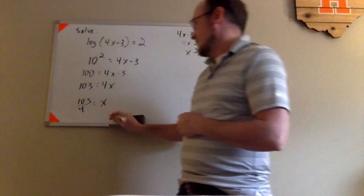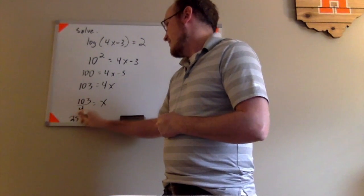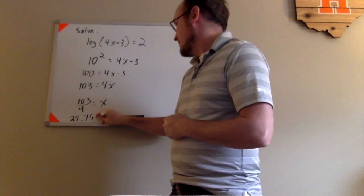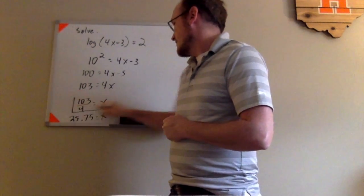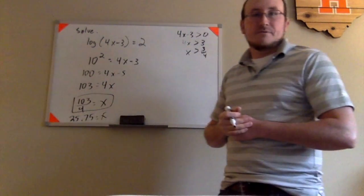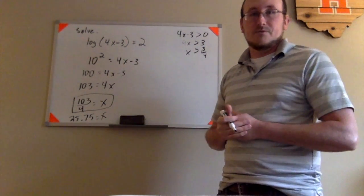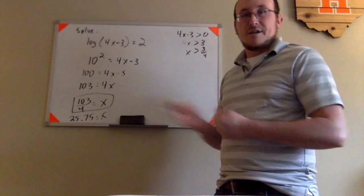If you prefer the decimal, that is 25.75. But I would just leave it as 103/4 if it was me. But 25.75 is acceptable as well. It's equivalent. That's how you do that.